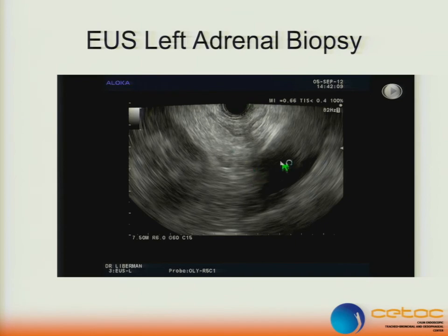This is a left adrenal biopsy on a CT and PET-negative adrenal gland that we saw on EUS as routine staging. When we're staging, we look at the liver, the adrenals, everything — the whole mediastinum. It looked a little fat; we biopsied it, and it came back adenocarcinoma — a right upper lobe tumor, mediastinal nodes negative on PET and CT. We presented at tumor board, the oncologist didn't believe it, so we had to take the patient back, did the EUS again — still positive — and after two times they agreed the patient was stage 4.